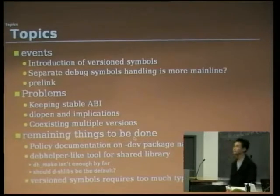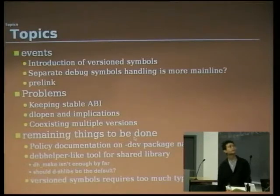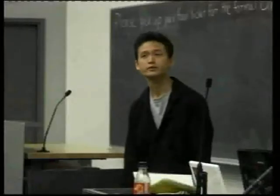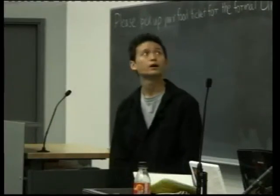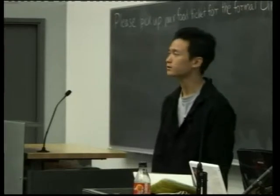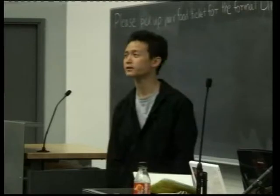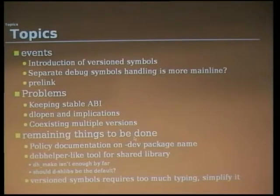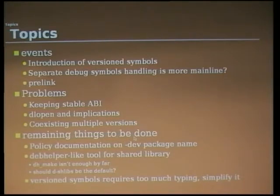In the three years since the shared library packaging guide started, there were some notable events: a larger-scale introduction of version symbols into Debian — previously only used in glibc — and debugging symbols in separate objects becoming more mainstream. Pre-linking was also introduced. The guide has not yet caught up with all of these changes. The core problems with shared libraries can be summarized as: keeping a stable API, using dlopen and understanding the implications of dynamically loading shared libraries, and coexisting multiple versions — because when you have multiple versions of a shared library, you have to know which version actually works.